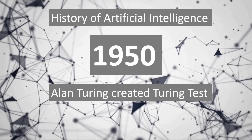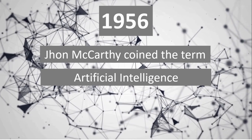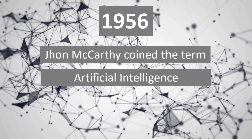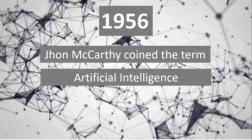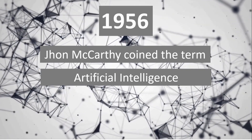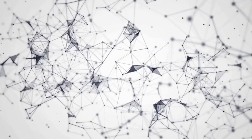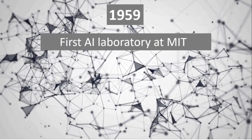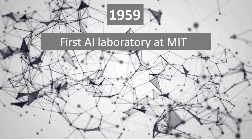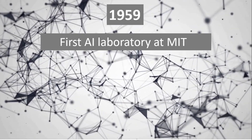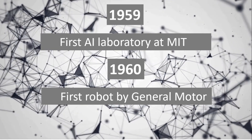The year 1956 is probably the most important year in AI, because the term 'artificial intelligence' was coined for the first time by John McCarthy at the Dartmouth conference. In 1959, the first AI laboratory was established at MIT, where research in AI has been performed and is still running today. In 1960, the first robot was introduced to the General Motors assembly line.